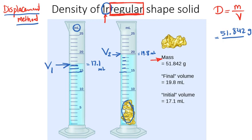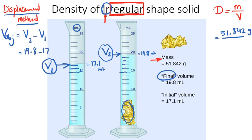Right now I'm going to find the difference between these two. The volume of the object is V2 minus V1, or you may say final volume minus initial volume.